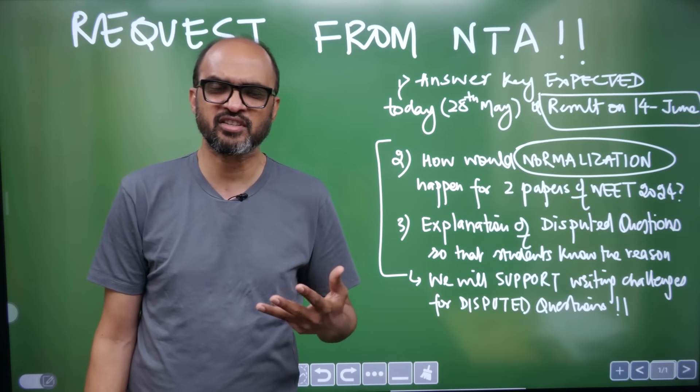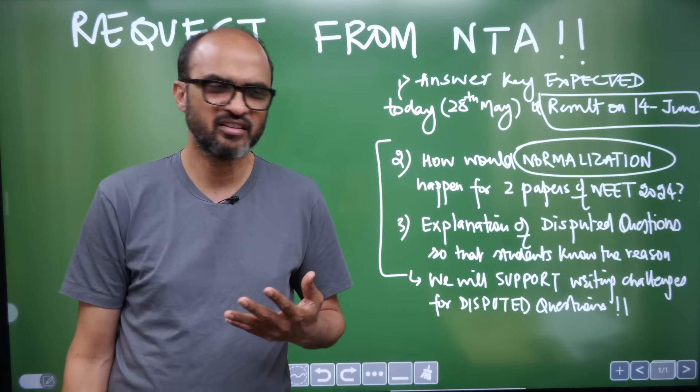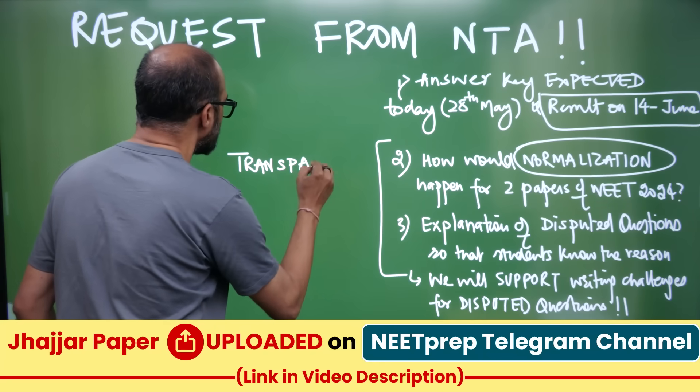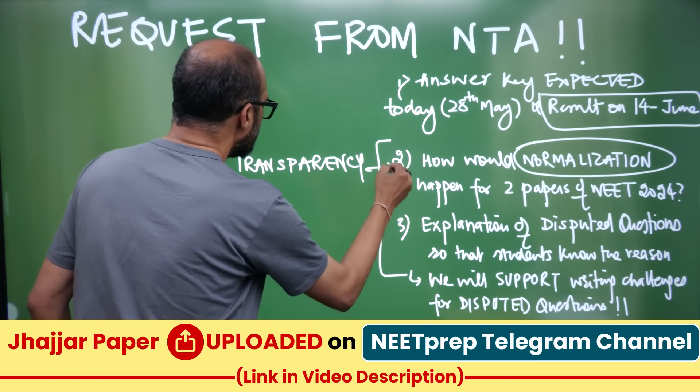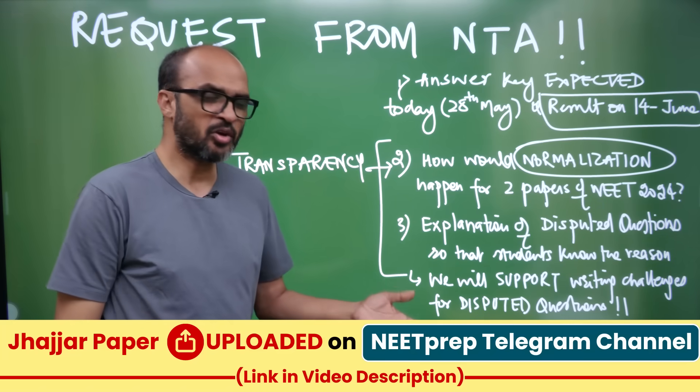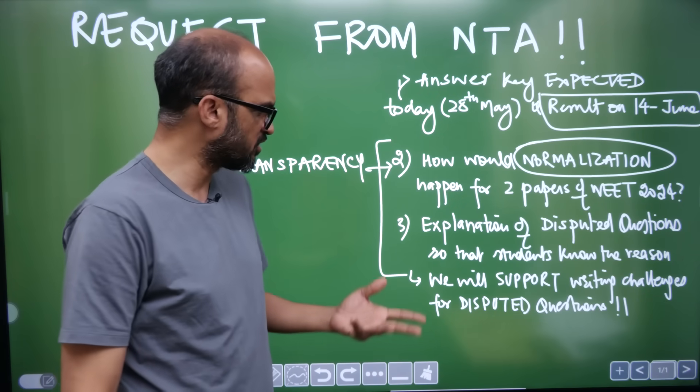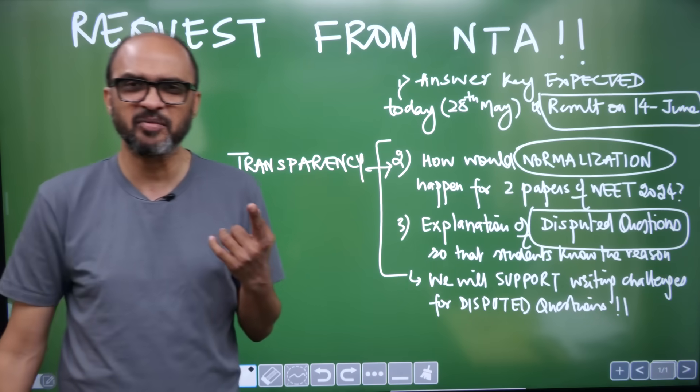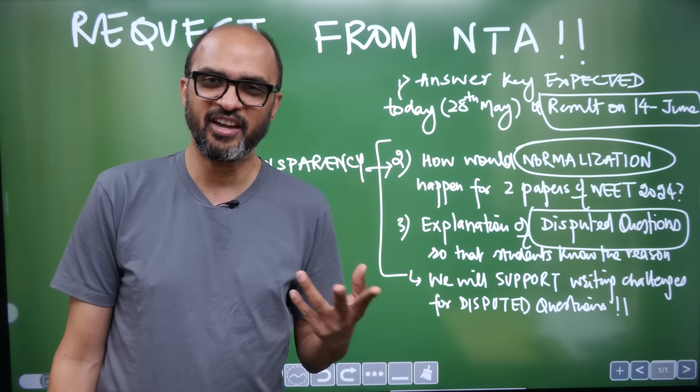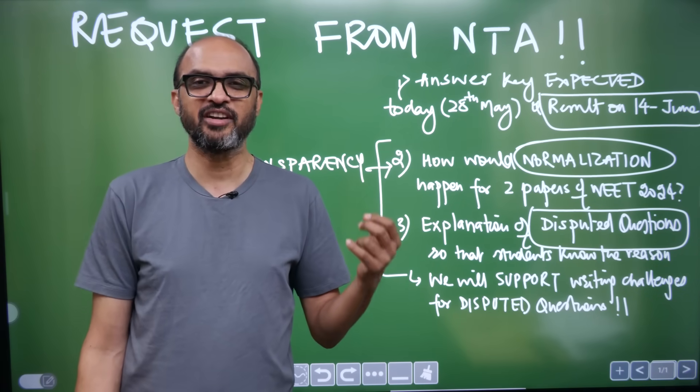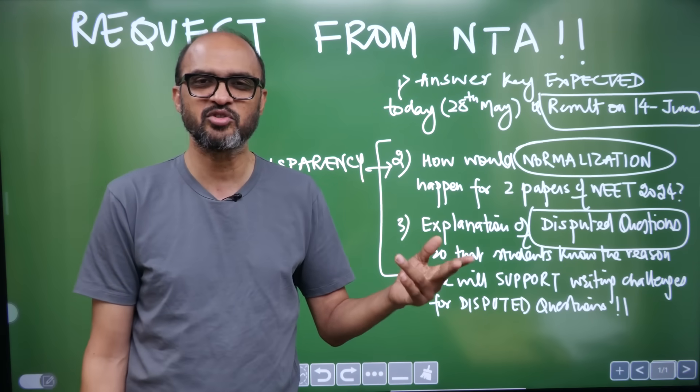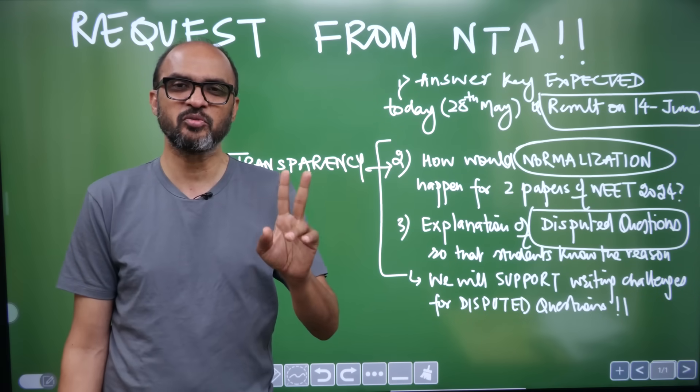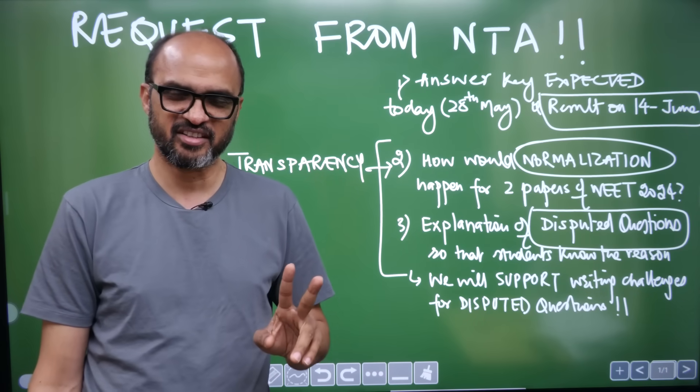I want to request NTA, since you are such a big agency, transparency should be there. People should know on what basis things are happening. My first request is that what is the normalization mechanism? Please NTA clearly tell us. Second thing, questions are disputed. I definitely know one physics question, because of which our two students who I've already put in the interview, Wajahendra and Saksham Agrawal. Wajahendra is from Nagpur and Saksham Agrawal is from Delhi. Both are getting 715 and they have marked that question. Both statements are correct.